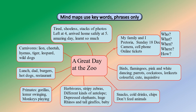Paragraph one of the mind map: My family and I, Pretoria, Sunday 18 December, camera, cell phone, online tickets. This is where I write the who, the what, the when, the where, and the how of my essay.